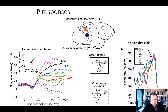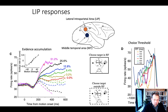The receptive field of these neurons codes for rightward movement. Depending on the correlation strength between the dots, the rise to threshold occurs faster when correlation strength is higher, and more slowly when it is decreased.